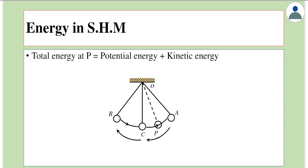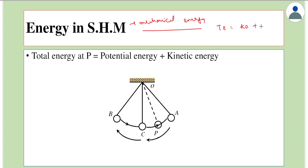Let's find out what is the total energy in simple harmonic motion. Here we talk about mechanical energy. The mechanical energy, or total energy, is equal to the sum of kinetic energy plus potential energy. We can take an example of simple harmonic motion to understand this.